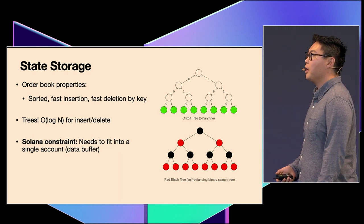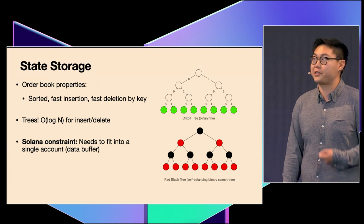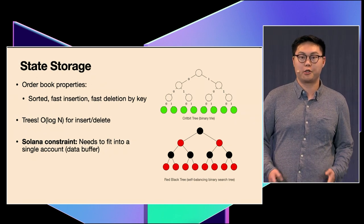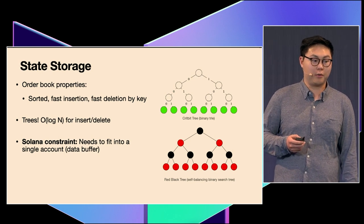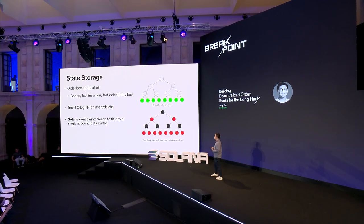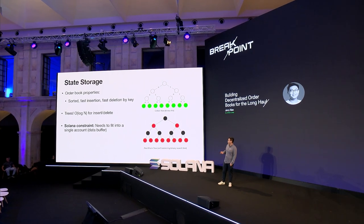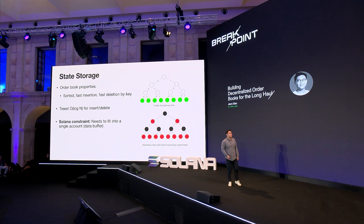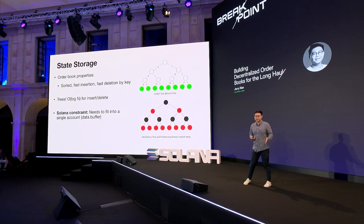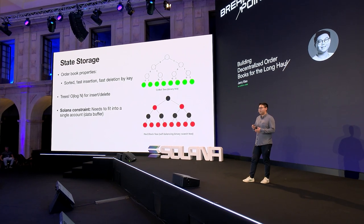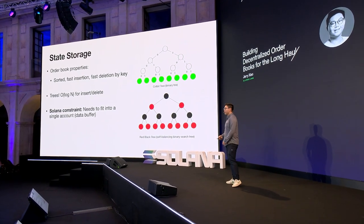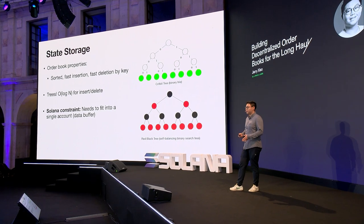For an order book in particular, you want the data structure to be sorted, have fast insertion, and fast deletion by key. These map to placing orders, trading, and cancelling. Placing orders is insertion, and cancelling and trading both correspond to deletion. The natural data structure from intro computer science is a tree, which has O(log n) operations for both insertion and deletion. However, Solana poses an additional constraint: you really want the tree to fit into a fixed-size buffer. Trees are usually defined recursively, meaning memory locality is quite disjoint, which makes fitting this structure into a fixed-size buffer tricky. This is a problem I worked on at Solana Labs with a library called Sokoban. For an order book, you can use a crit bit — a binary trie — or some sort of self-balancing binary search tree; both are viable options.